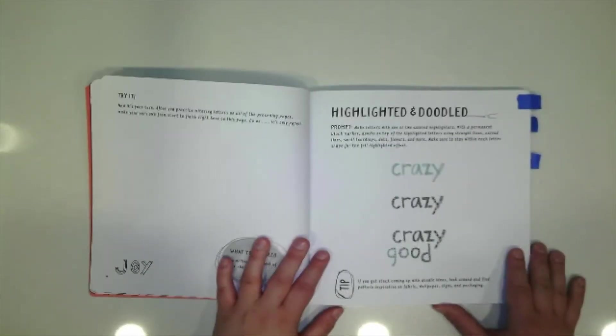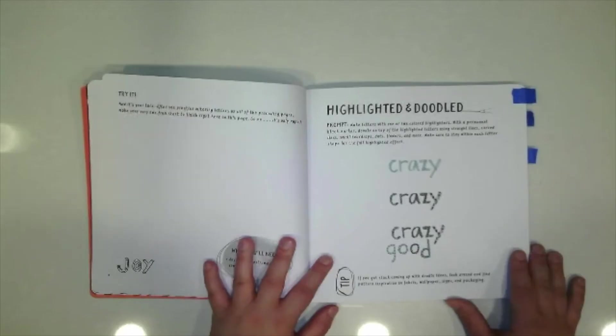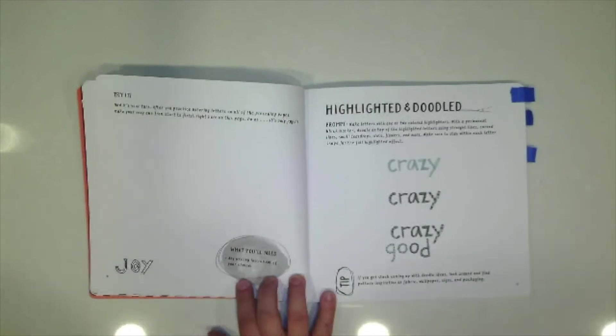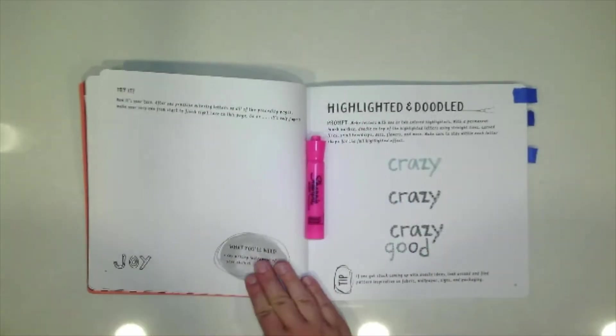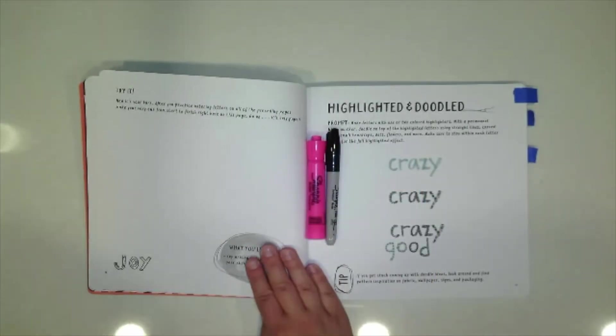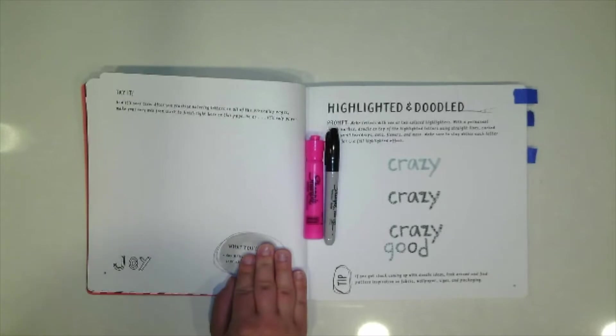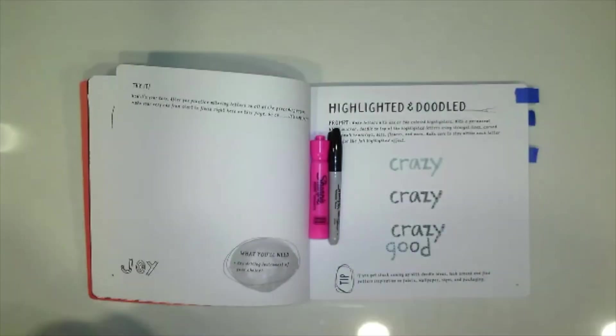So we're going to start with Highlighted and Doodled. So to do this calligraphy you are going to for sure need paper, a highlighter, and a darker marker. I'm also going to use a pencil and ruler to help keep my word nice and even.